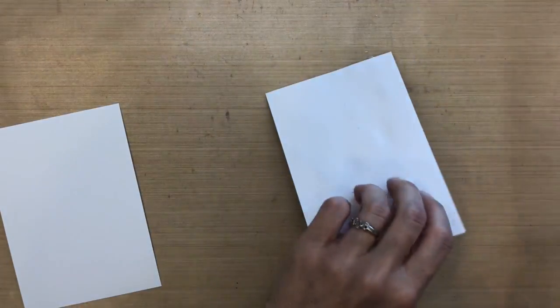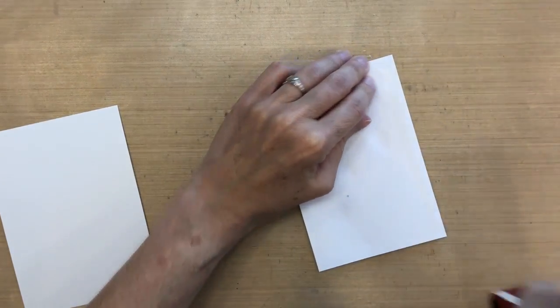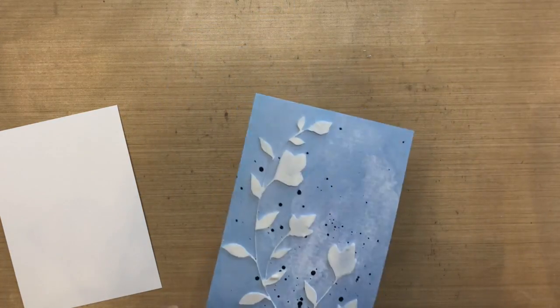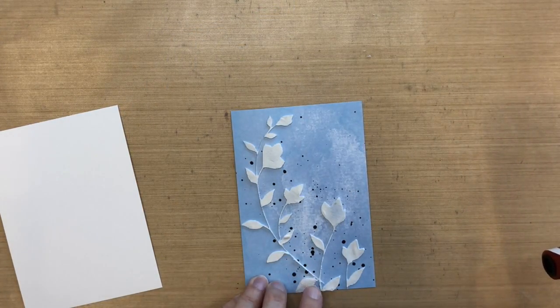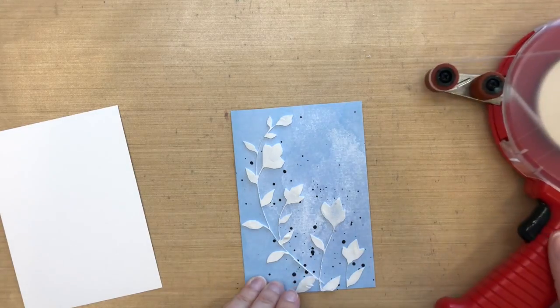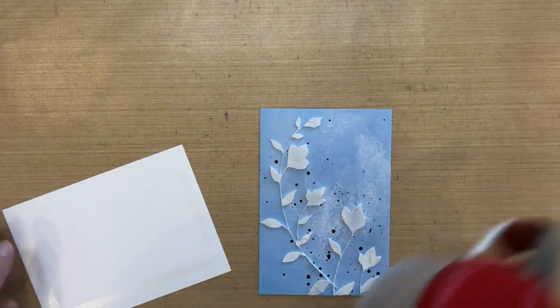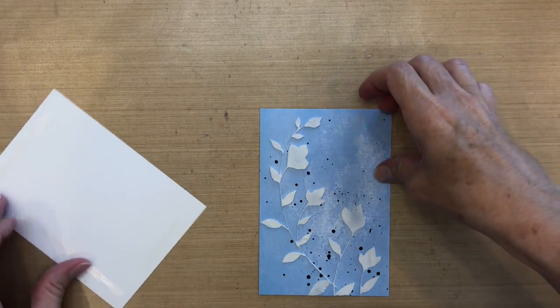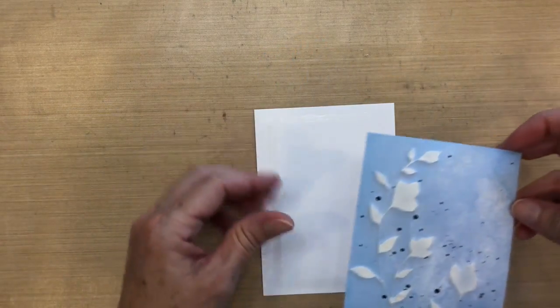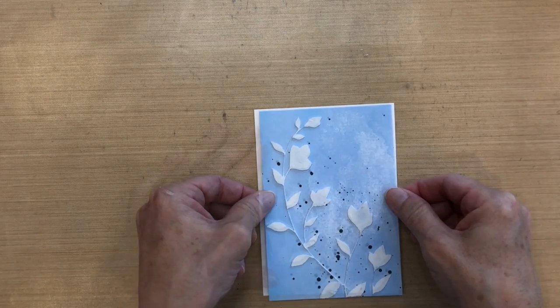I let that dry completely and then I trimmed it to 5.5 by 3.75 inches. Then I realized that it wasn't actually dried completely, so it started mushing around a little bit. But I was kind of in a hurry to get this card done, so I went ahead and put some tape runner onto my white panel, which is 4 inches by 5.5.